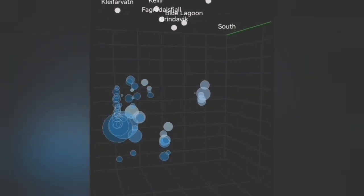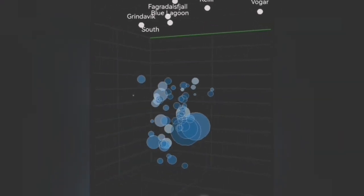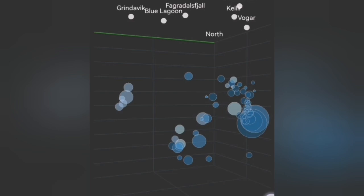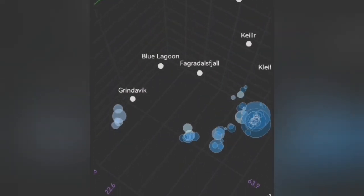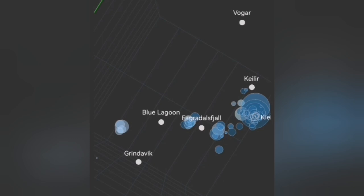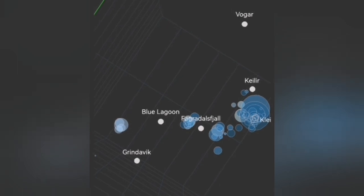and the third in the Krýsuvík area. These are the volcanic systems, each of which is active at this stage. Tectonically, we have earthquakes and tremors, which means there are movements of the rocks along the fault lines.